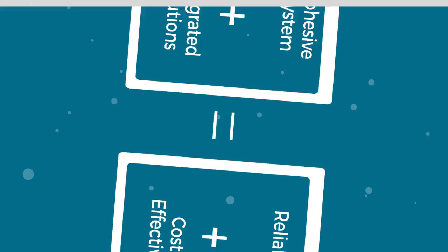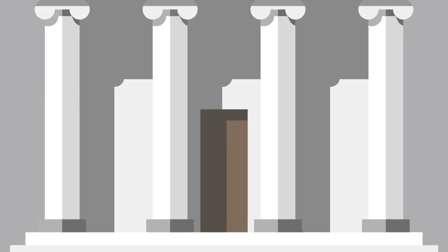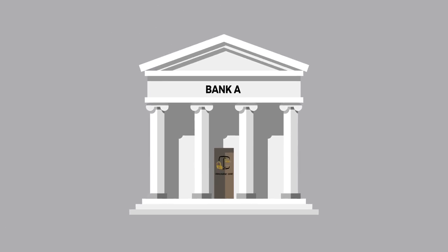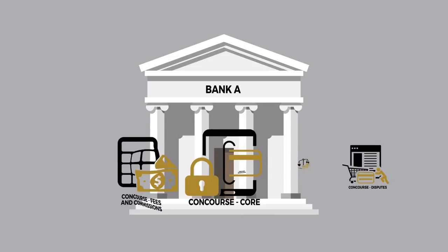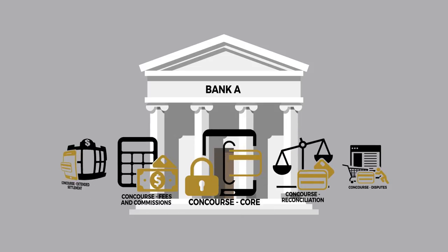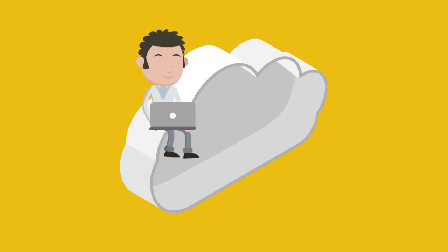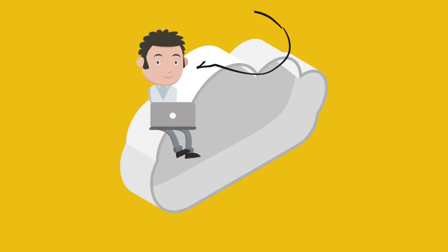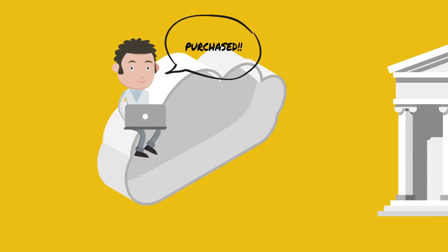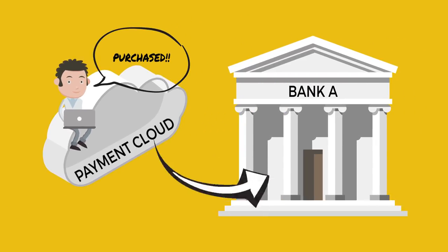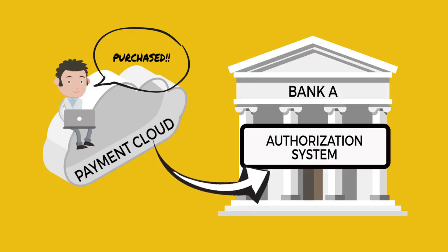To illustrate, let's take a look at the credit card transaction we mentioned earlier and how it will move through the Concourse Financial Software Suite. If you recall, Joe used a credit card to place an online order. Once Joe's order was completed, the transaction data was sent to Bank A's authorization system.